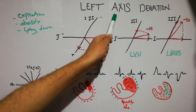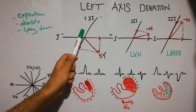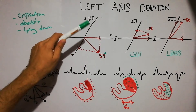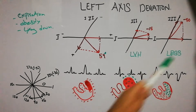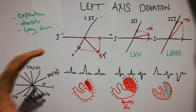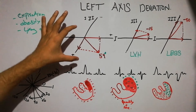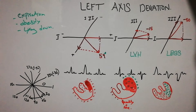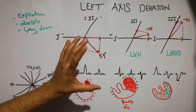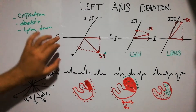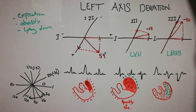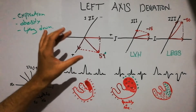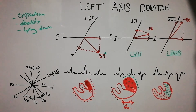Today we are going to discuss left axis deviation and the vector analysis for left axis deviation due to left ventricular hypertrophy and left bundle branch block. In the previous lecture we discussed that the mean QRS ventricular vector, or the cardiac vector, in a normal heart is about 59 degrees, and we discussed how to determine the normal axis and the importance of lead 1 and lead 3 in determining it.